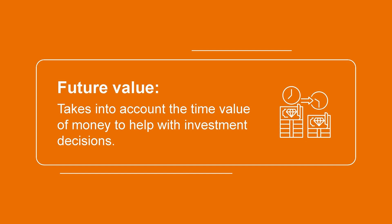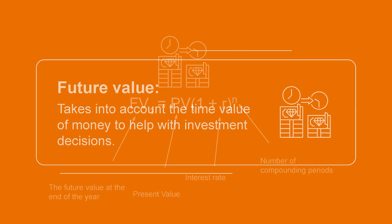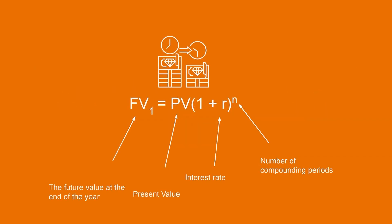Before we dive into present value, let's briefly discuss the idea of future value. As we know, money can earn interest over time, and future value takes into account the time value of money. It can help companies and investors with investment decisions by determining the potential value of an asset and the expected rate of return they'll earn over time. Future value can be calculated as follows: present value multiplied by 1 plus the interest rate to the power of the number of compounding periods.